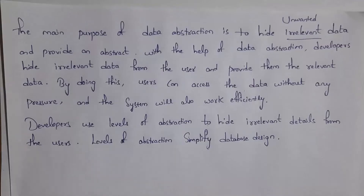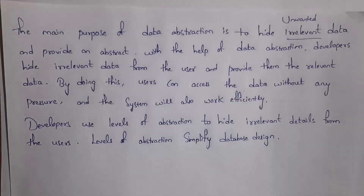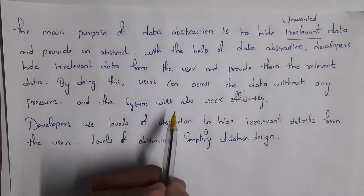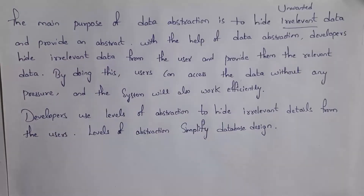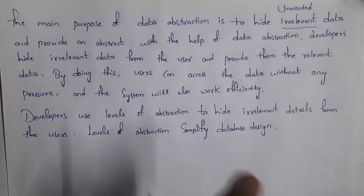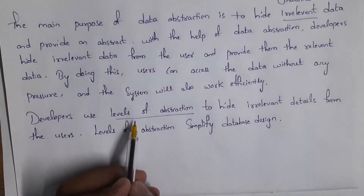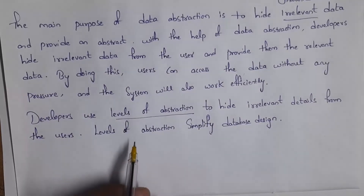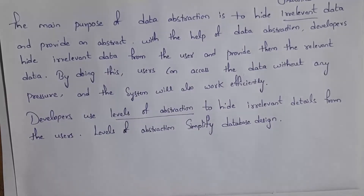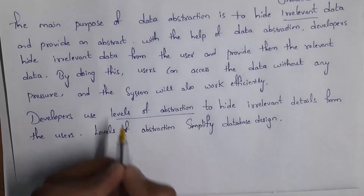With the help of data abstraction, the developer will hide unwanted information from the user and display only related information, so the user can easily access data without any pressure and the system works efficiently. For example, if we display unwanted data to the user, the database will consume a lot of memory and the system will slow down. So if we display only related information, the system will work efficiently. Developers use levels of abstraction to hide unwanted information, and these levels of abstraction simplify database design.